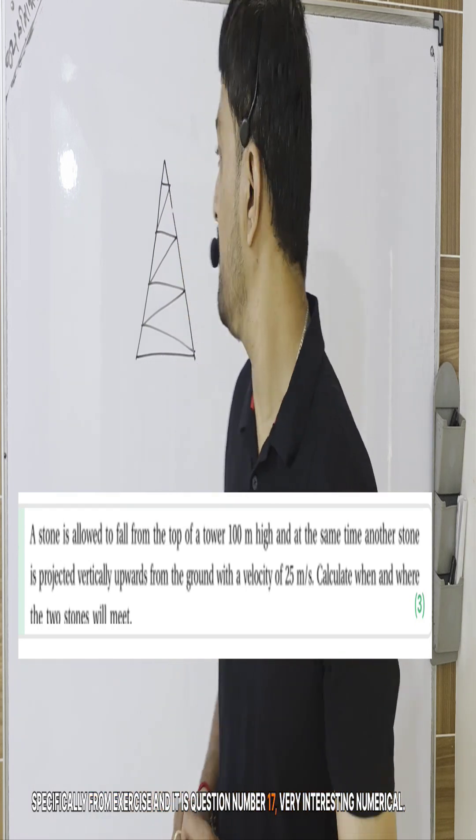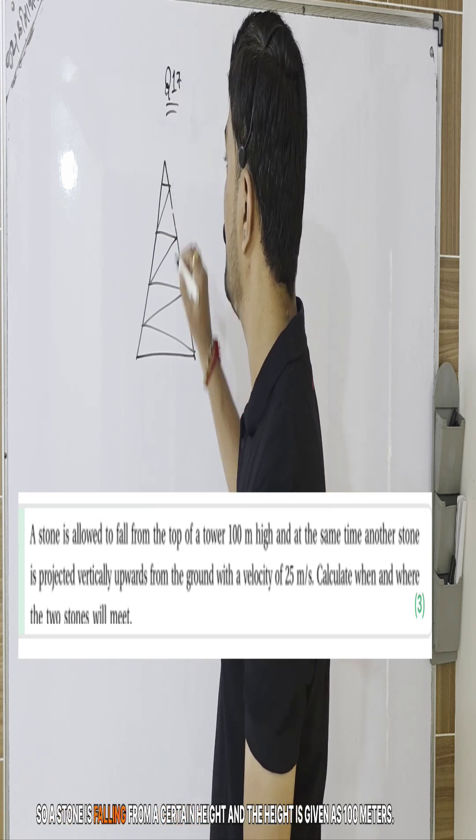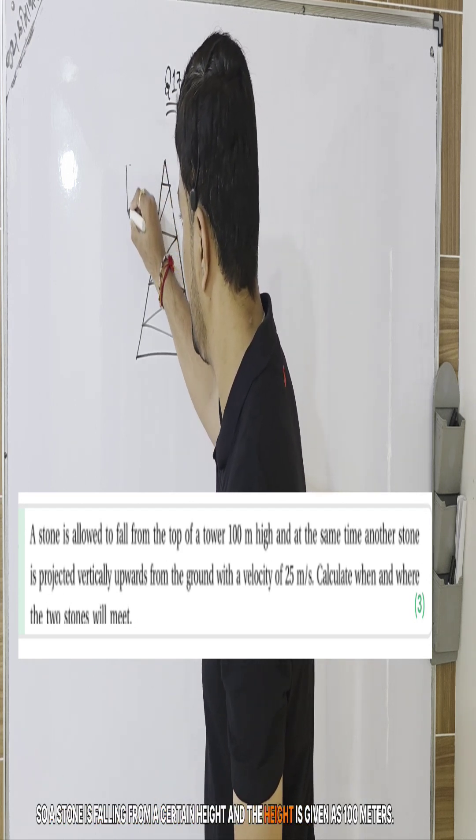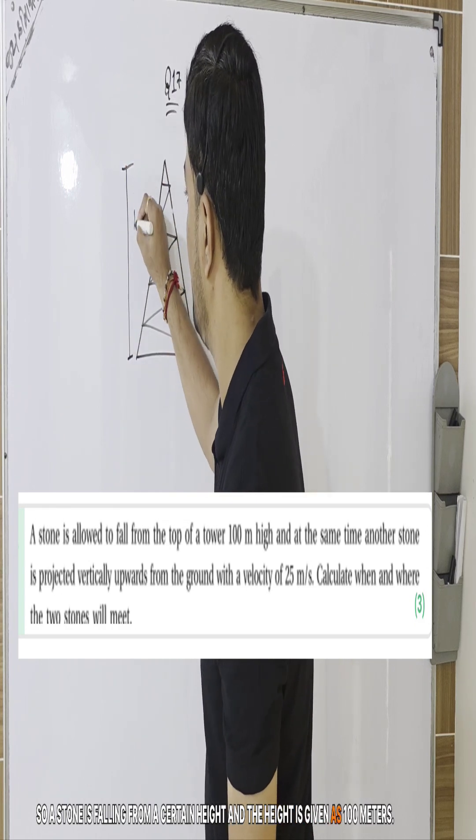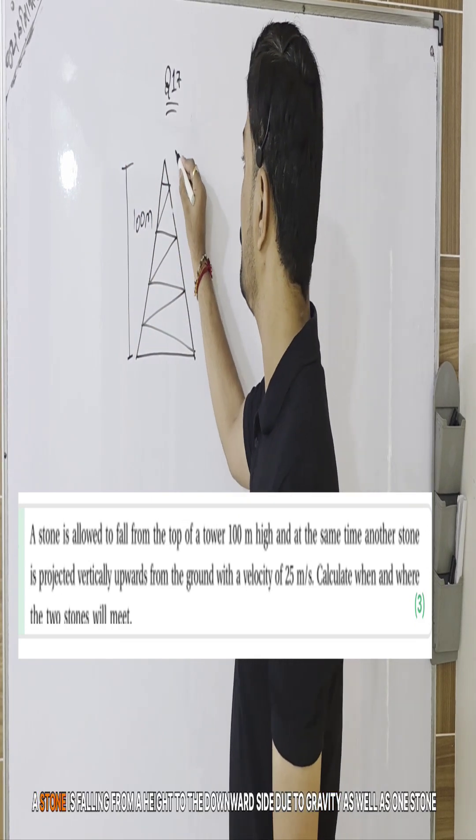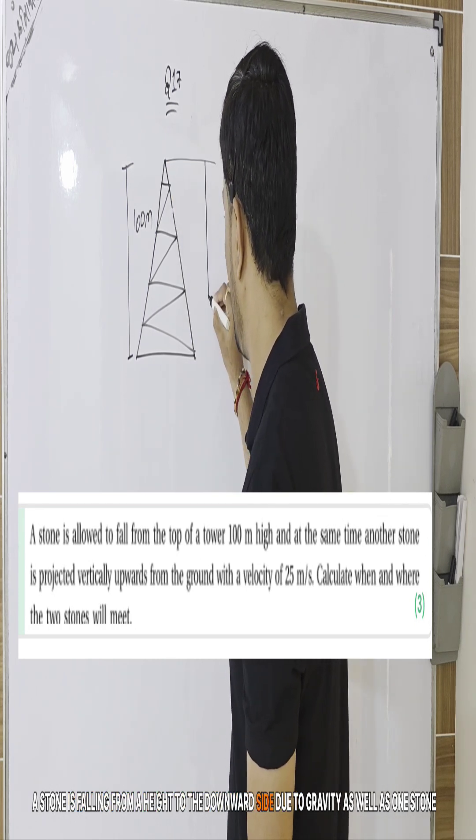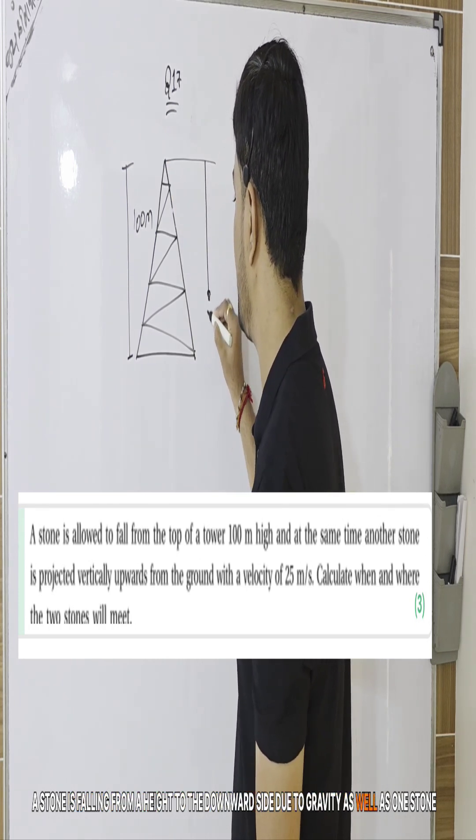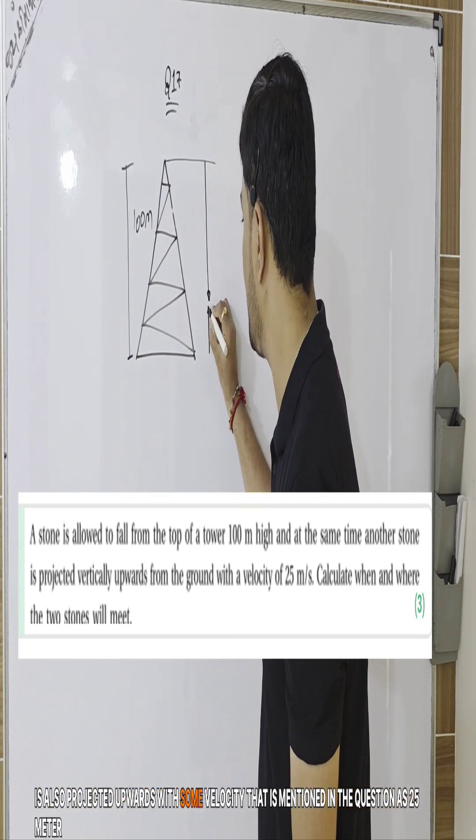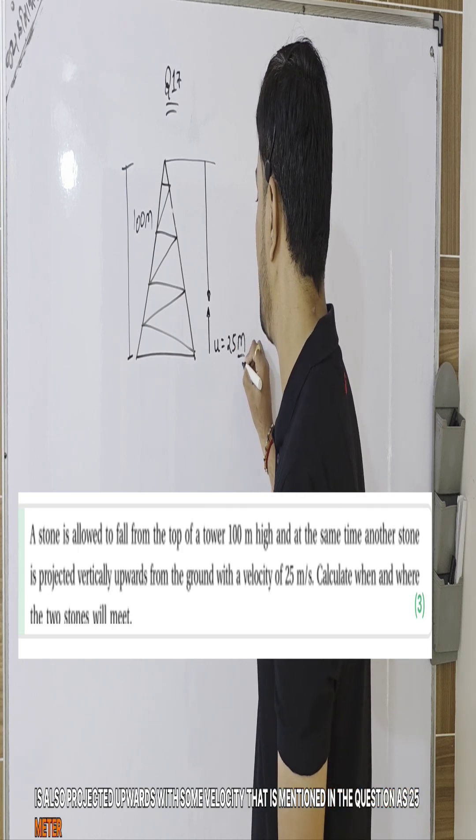Very interesting numerical. A stone is falling from a certain height, and the height is given as 100 meters. The stone is falling from a height downward due to gravity, as well as one stone is also projected upwards with some velocity that is mentioned in the question as 25 meter per second.